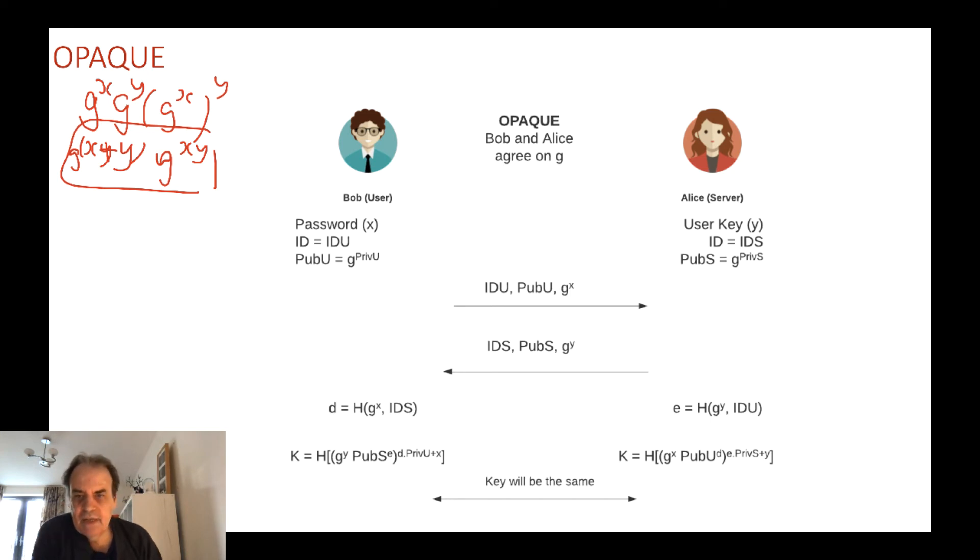Initially Bob will have a secret password. We take a hash of that and that becomes the value of X. He will also have an identity such as Bob, that's his login name. Now what we'll do is create a private key, and then to create his public key he takes G and raises it to the power of his private key to create his public key. So this will be the key that he uses for this authentication that he will have with Alice.